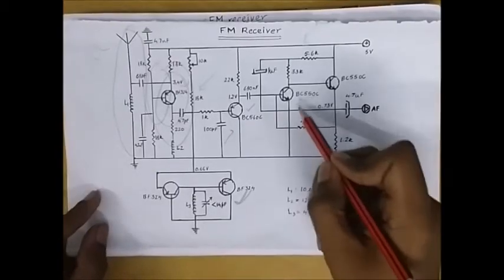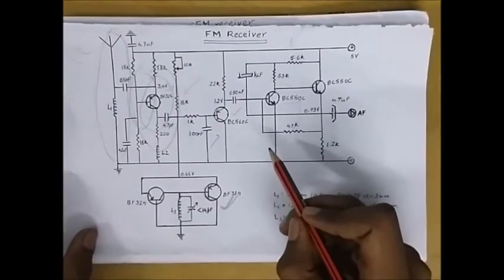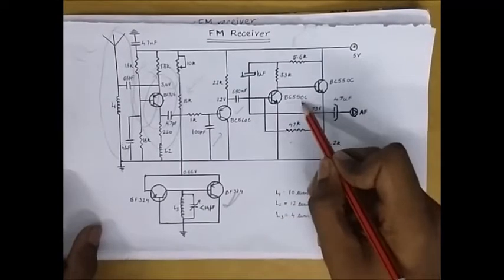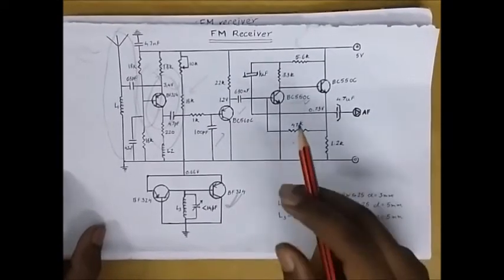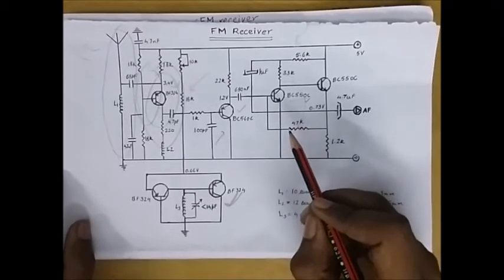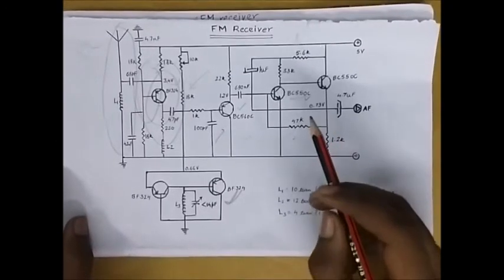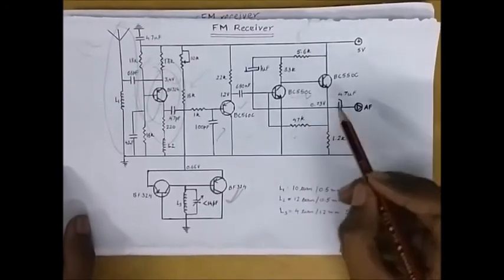Now the electrical signal goes to the demodulator which removes the carrier waves and produces an audio signal. This low amplitude audio signal is passed to AF amplifier or audio frequency amplifier which amplifies it and provides a crystal clear audio without noise, garble, and humming sound.